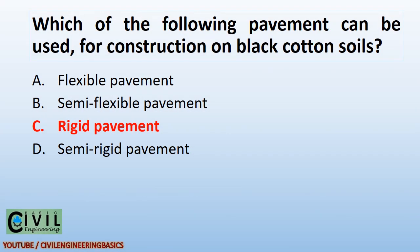Which of the following pavements can be used for construction on black cotton soils? Rigid pavement is made on black cotton soil.